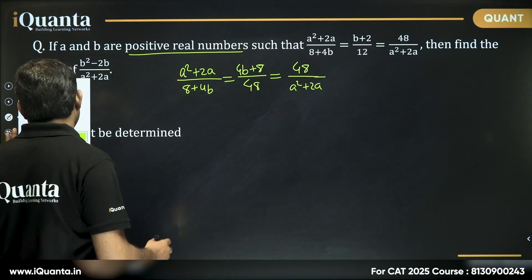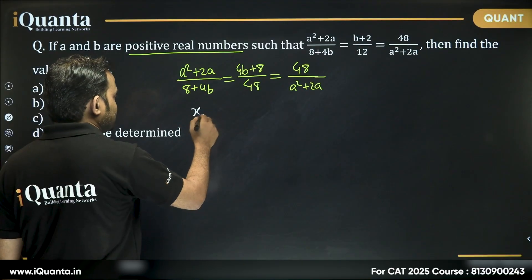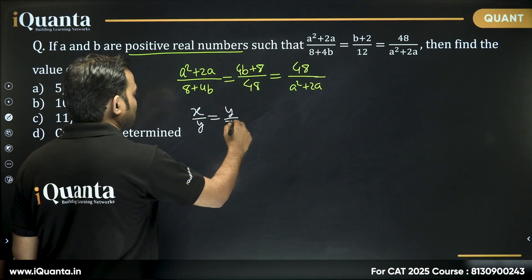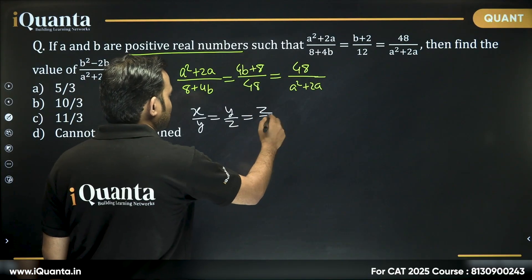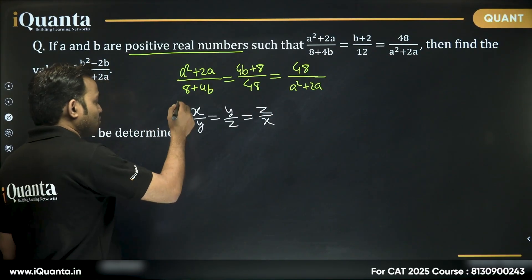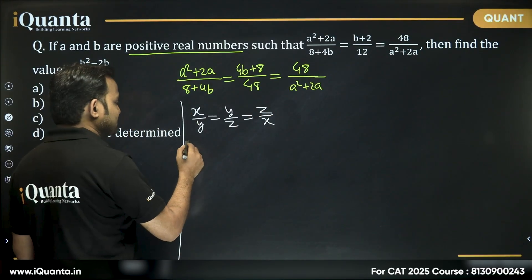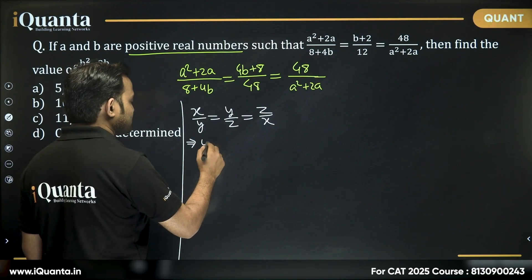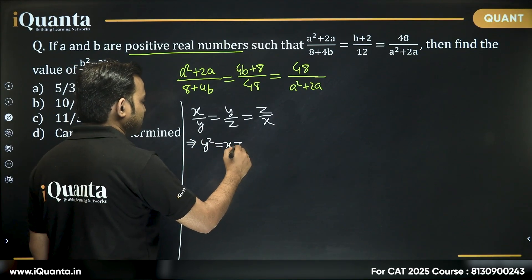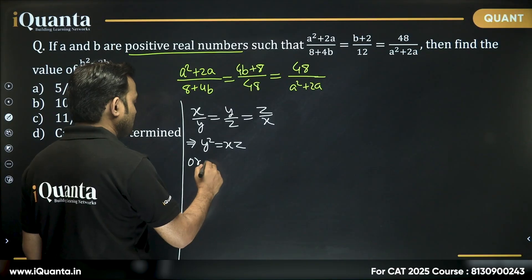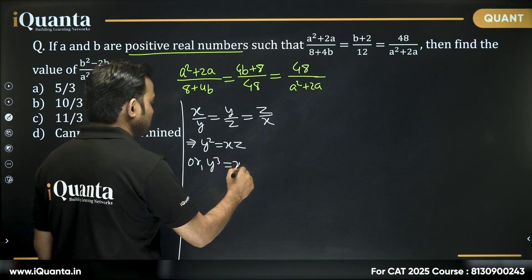So let me tell you one thing, if you see expression like this like x by y is equal to y by z is equal to z by x. So taking the first two, can I say that y² is equal to xz or y³ will be equal to xyz.